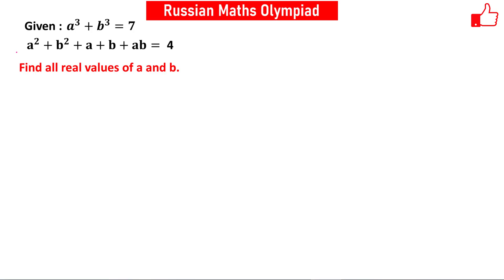Hello friends. This problem is taken from the Russian Maths Olympiad. We have two equations and two unknowns: the first equation is a³+b³=7, and the second equation is a²+b²+ab+a+b=4. We have to find all real values of a and b that satisfy these two equations.